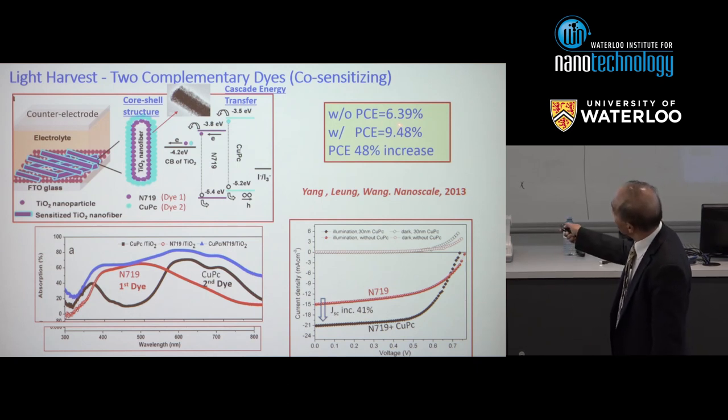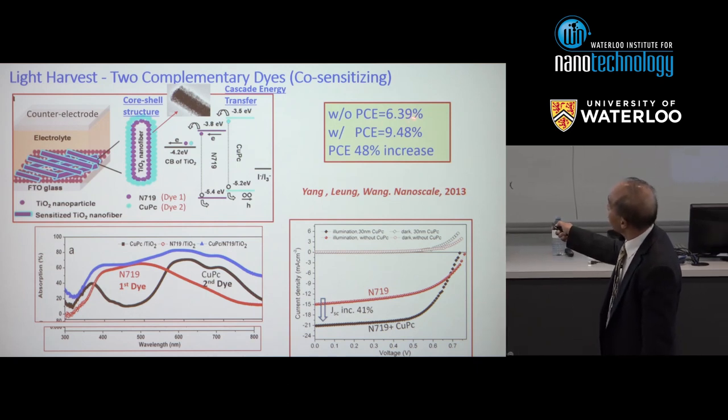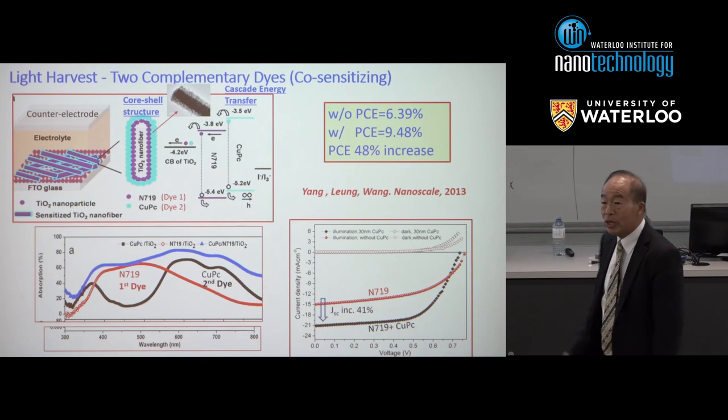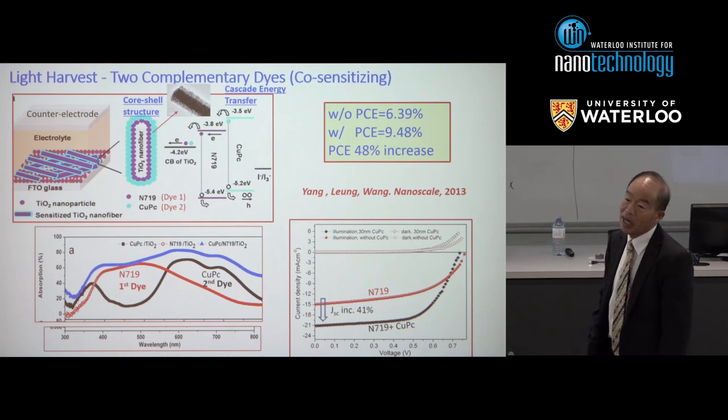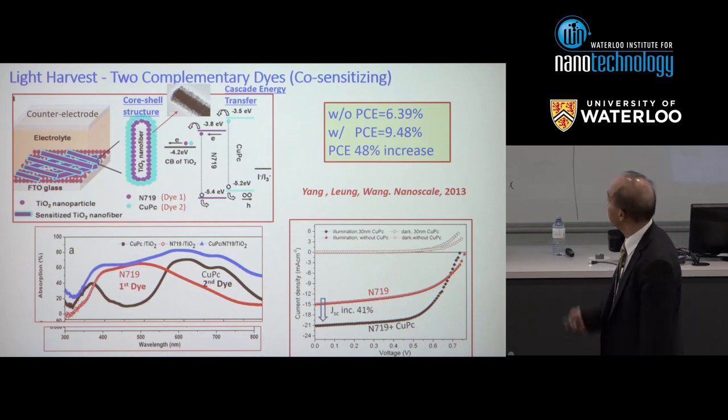As a result, we found the current improved by 41% and the PCE increased by almost 50% from the baseline level.